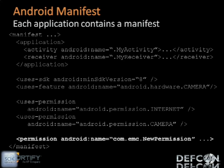The developer can say that it's a normal permission and will be granted automatically on install, they can say it needs approval of the user, or they can require that an application requesting this permission has the same signature as the application that defines the permission.